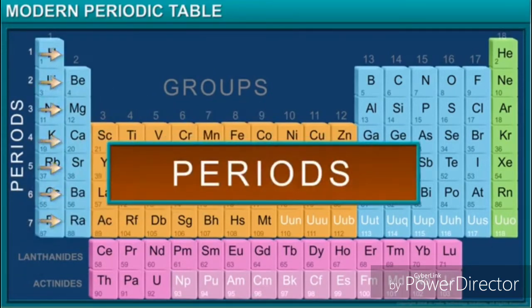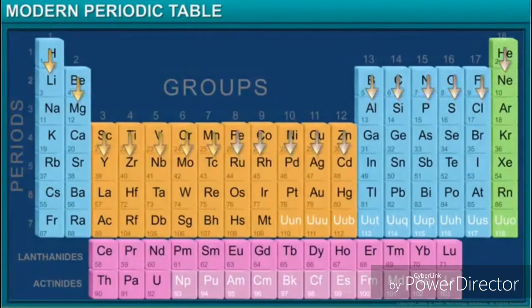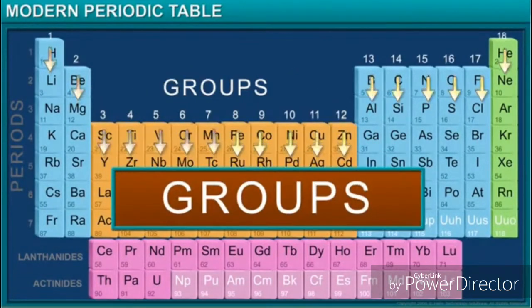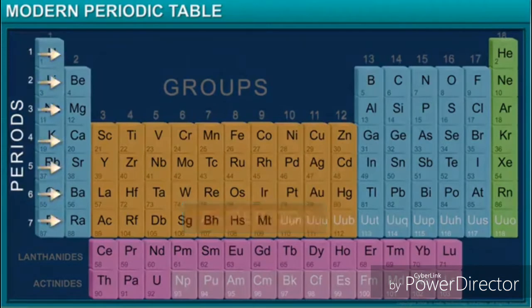Each period starts by filling a new energy level, and there are 18 vertical groups. Each group has modern numbers such as 1, 2, 3, 4, 5, and traditional numbers such as 1A to 8A, and so on.